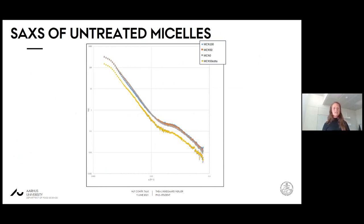This is the SAXS of the actual untreated micelles. The main difference that we can observe is happening in the intermediate region, at least among the MCN 100, 50 and 0, and also in the intensity of the high Q shoulder. The intensity of the EDTA treated micelle is lower for all Q values, and I think that's because more casein dissociates due to the EDTA treatment. My point is that we can actually observe changes, even when we have treated the micelles very mildly.